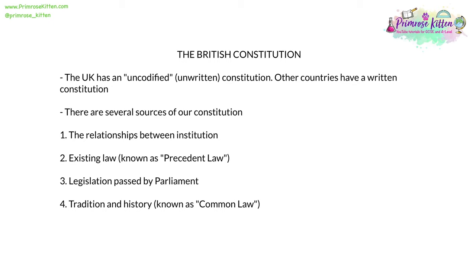When looking at the British constitution, it's important to remember that the UK has an uncodified or unwritten constitution. Other countries, such as the United States, have a written constitution. There are several sources for our constitution: the relationships between different institutions — how Parliament, the Cabinet, the Prime Minister and the Judiciary interact with each other; existing law, also known as precedent; legislation passed by Parliament; and tradition and history, known as common law.